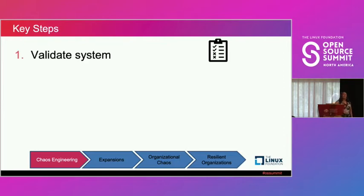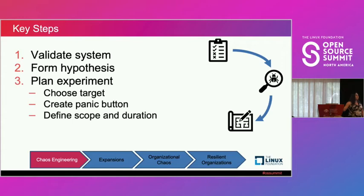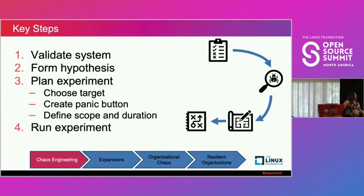The key steps: validate your system — you have to understand it well enough to conduct experiments. Create a hypothesis about how it's going to behave. Plan the experiment — what are you testing, what's your panic button if things go wrong, how long will you run the test, and what is the scope? Then run the experiment and monitor. Rinse and repeat.